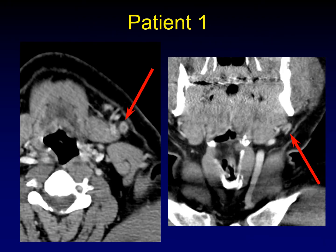Okay, here's patient number one. This time I'm going to give you a coronal reformat of the exact same node so that you can see that what looks like necrosis in the center of the node is, in fact, partial volume of a fatty hilum. You can really see that it's a fatty hilum when the image is reconstructed into a different plane. That is partial volume of a normal fatty hilum in a perfectly normal lymph node.